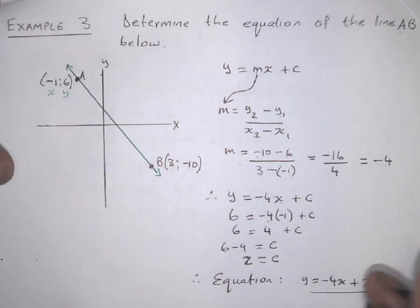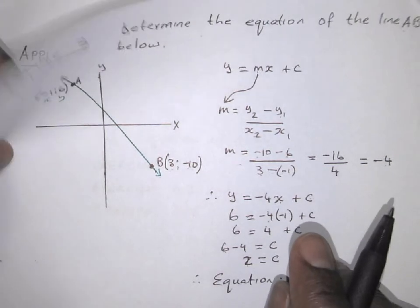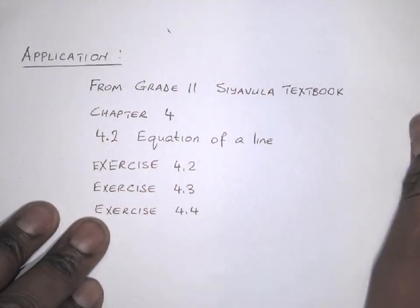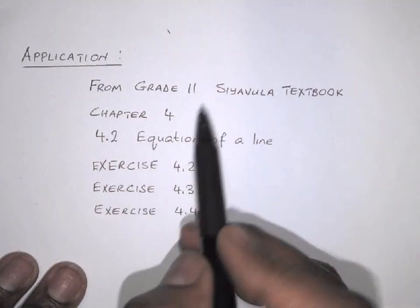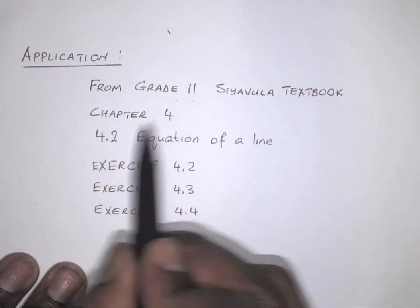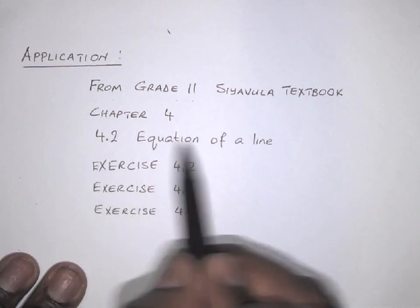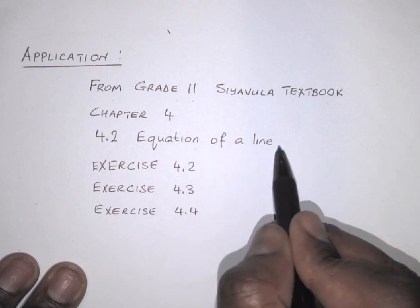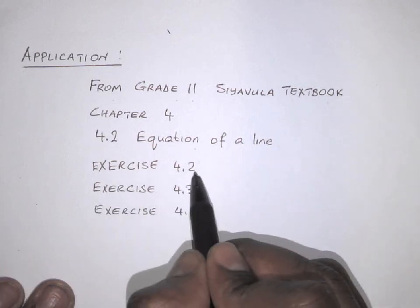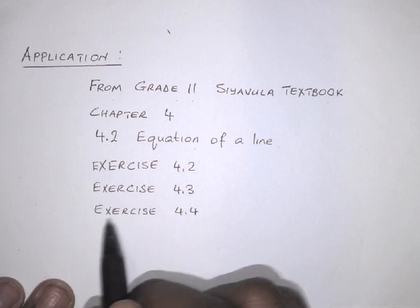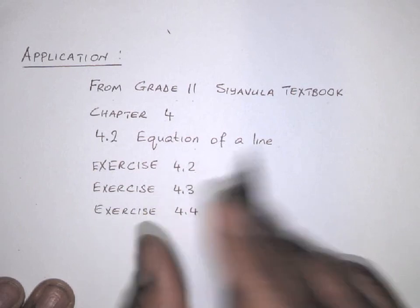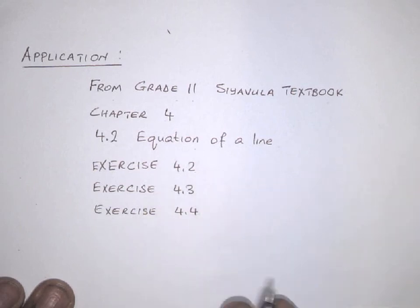That's as simple as that. On your own, can you try some of the problems from the Grade 11 Cervula textbook? Chapter 4, section 4.2 is the equation of a line. Do exercise 4.2, exercise 4.3, and exercise 4.4. They're all similar to these ones here. Just enjoy.